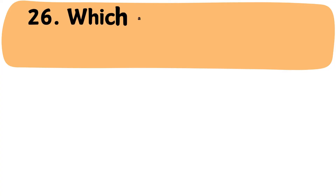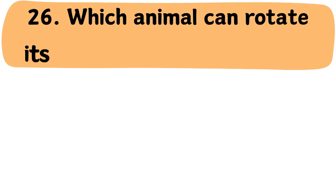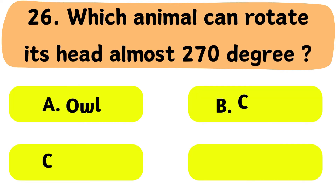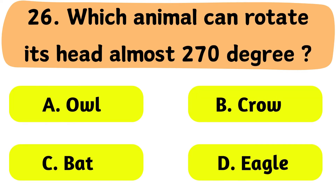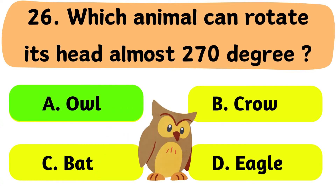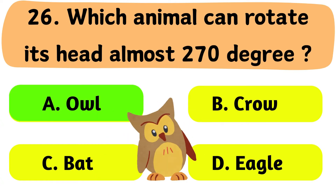Question No. 26: Which animal can rotate its head almost 270 degrees? A. Owl. B. Crow. C. Bat. D. Eagle. The correct answer is Option A: Owl.